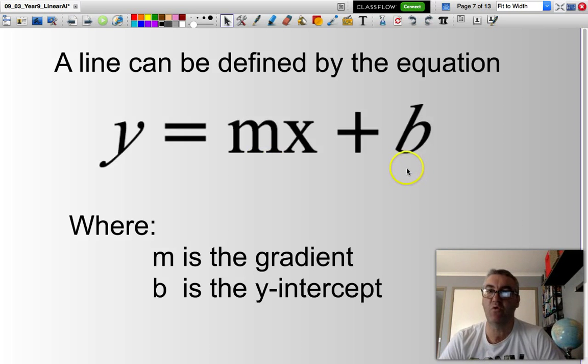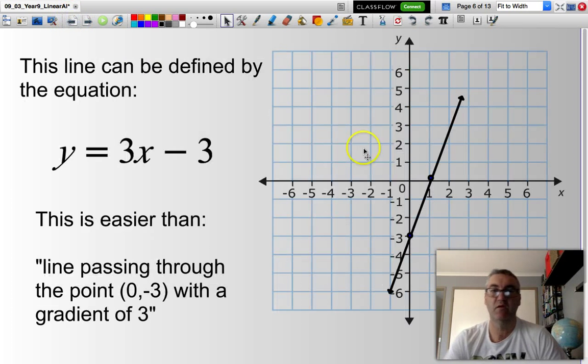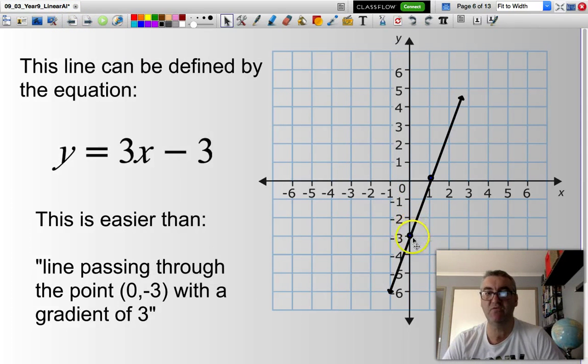And b is the y-intercept. It's the number where the line passes through the y-axis. The y-intercept here is negative 3. That represents where I go through the y-axis. And the 3 here represents the steepness of the line, the gradient. In other words, I've gone up 3 and across 1.